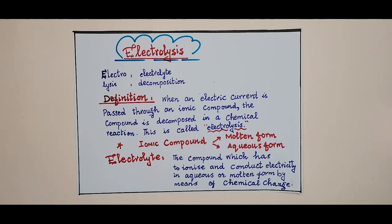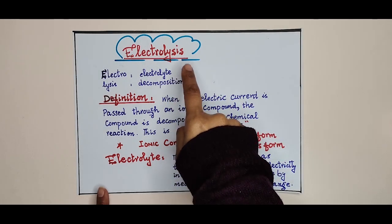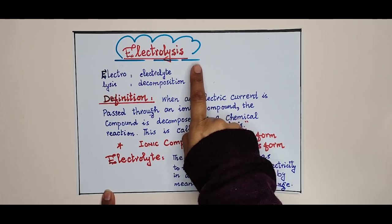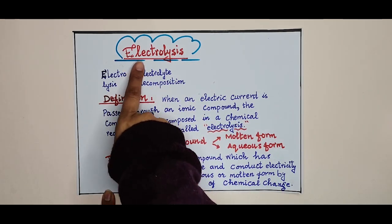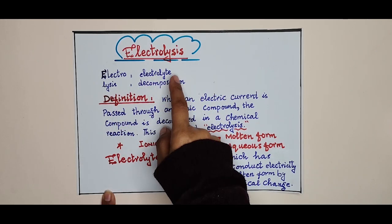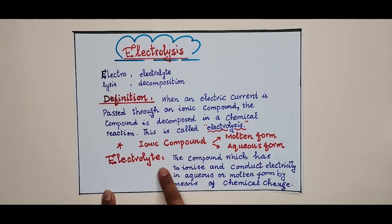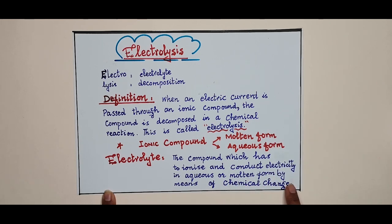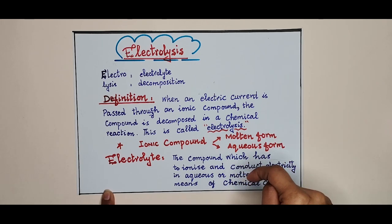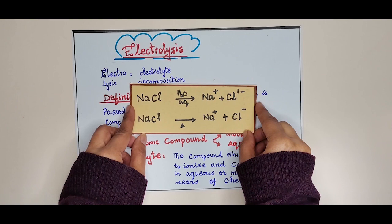In this lecture I am going to tell you what basically electrolysis is. Electrolysis is a combination of two words: electro and lysis. Electro means electrolyte and lysis means decomposition or breakdown of a compound. An electrolyte is basically the compound which has to ionize and conduct electricity in aqueous or molten form by means of chemical change. An electrolyte is an ionic compound — for example, sodium chloride.